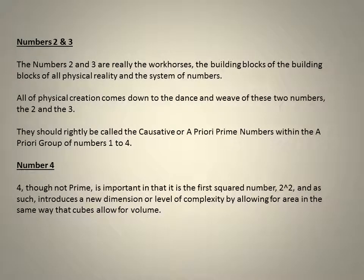Numbers 2 and 3. The numbers 2 and 3 are really the workhorses, the building blocks of all physical reality and the system of numbers. All are physical numbers, the 2 and the 3. They should rightly be called the causative in the a priori group of numbers 1 to 4. 4 is important in that it is the first squared number, 2 squared, and as such introduces a new dimension or level of complexity by allowing for area.